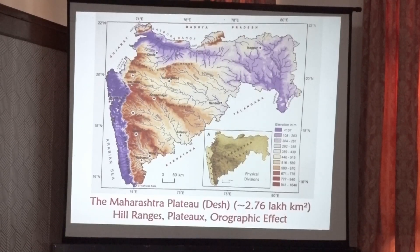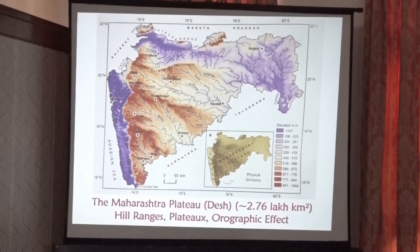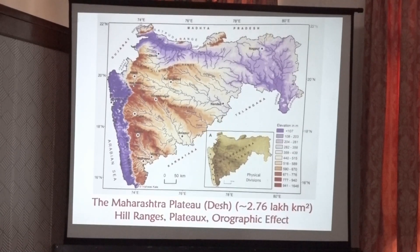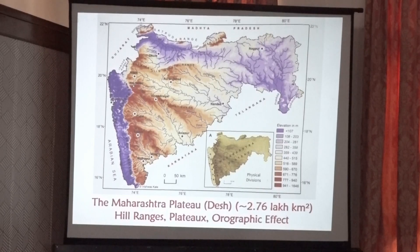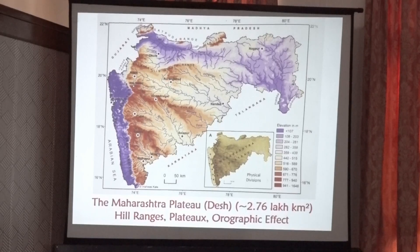Maharashtra has been divided into three parts. The first and most prominent is the Maharashtra plateau, also called the Desh area, which covers about 2.76 lakh square kilometers. This plateau is characterized by various hill ranges, and the Western Ghats is its western margin, playing an orographic effect and causing this part of Maharashtra to receive very less rainfall.